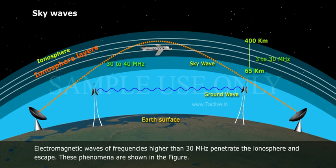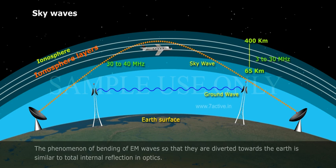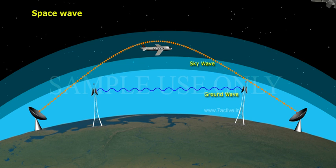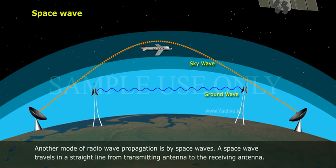Electromagnetic waves of frequencies higher than 30 megahertz penetrate the ionosphere and escape. These phenomena are shown in the figure. The phenomenon of bending of EM waves so that they are diverted towards the earth is similar to total internal reflection in optics.